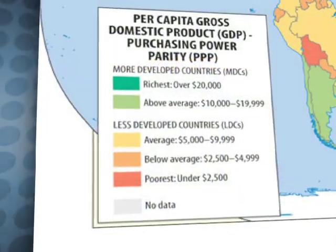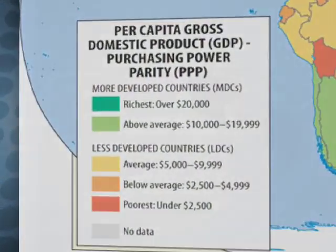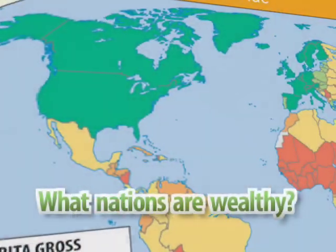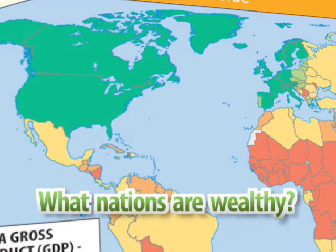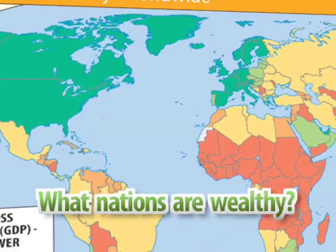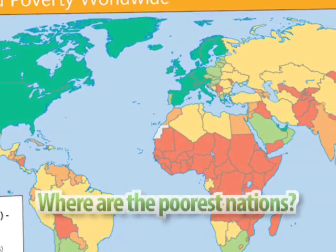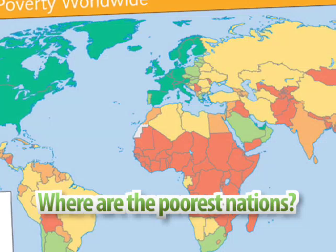Please examine the world map of wealth and poverty. What are some examples of relatively wealthy nations across our globe? On the other hand, where are the poorest nations located?